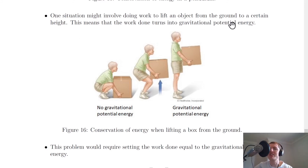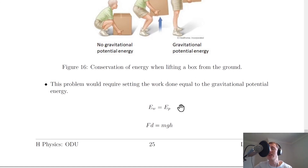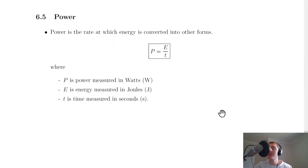One last situation: doing work to lift an object from the ground to a certain height. The work done turns into gravitational potential energy. If you pick up a box from the ground, you do work to lift it, and once lifted it has gravitational potential energy. This requires setting Ew = Ep, or writing fd = mgh, and you can then solve for whichever unknown you need.